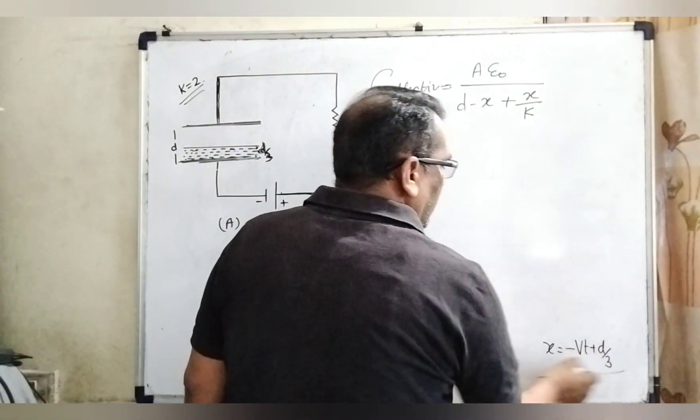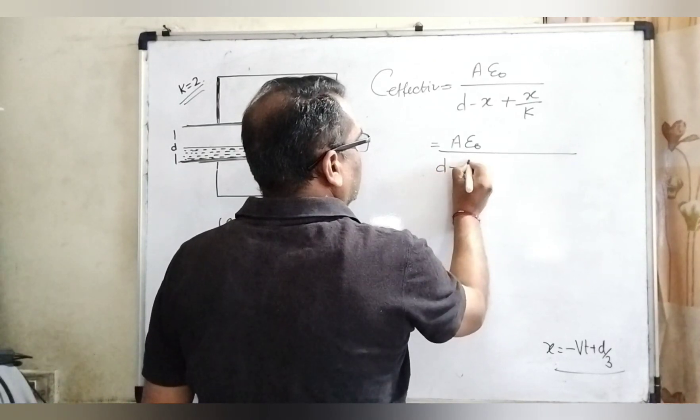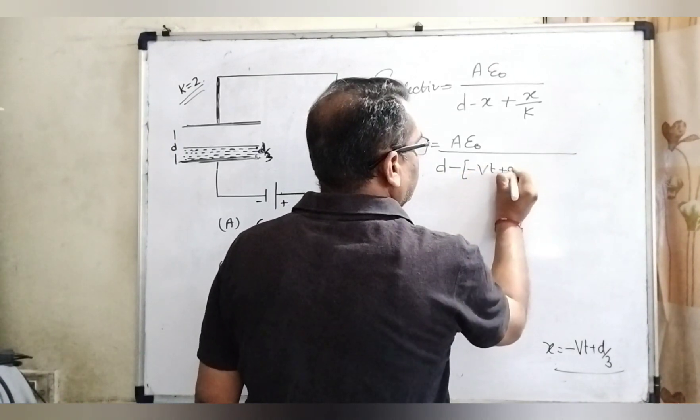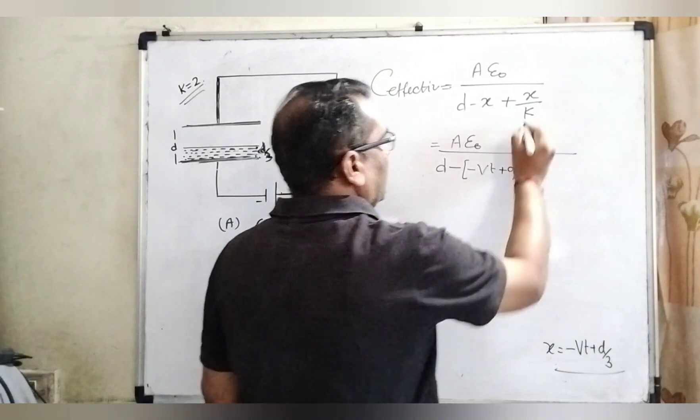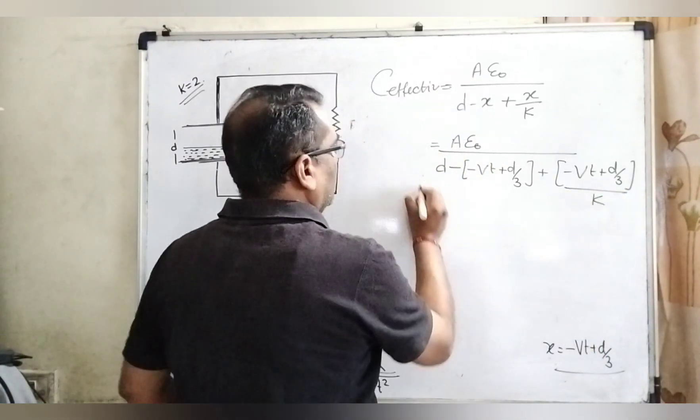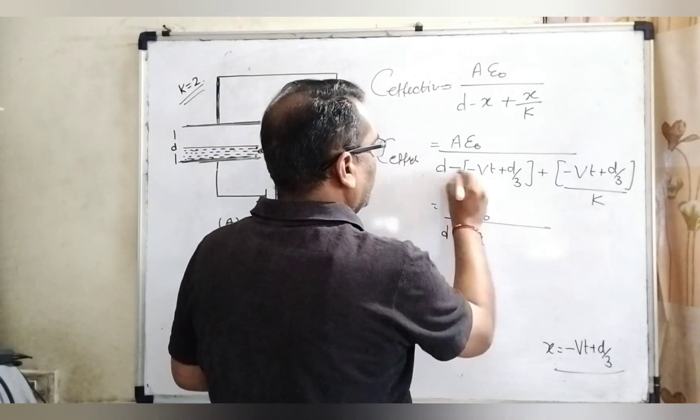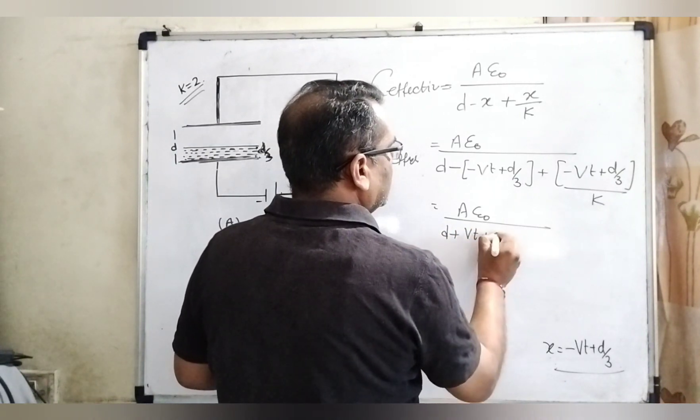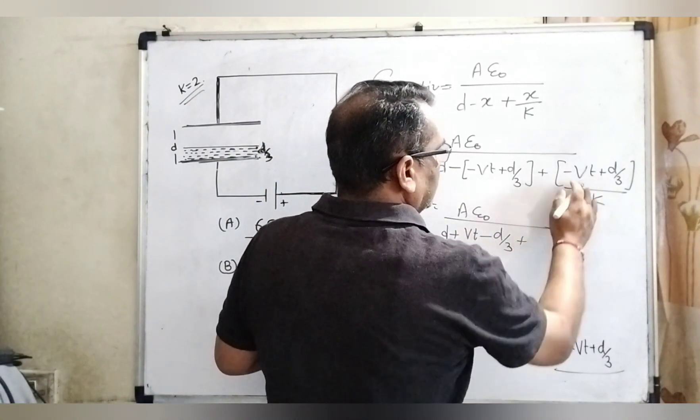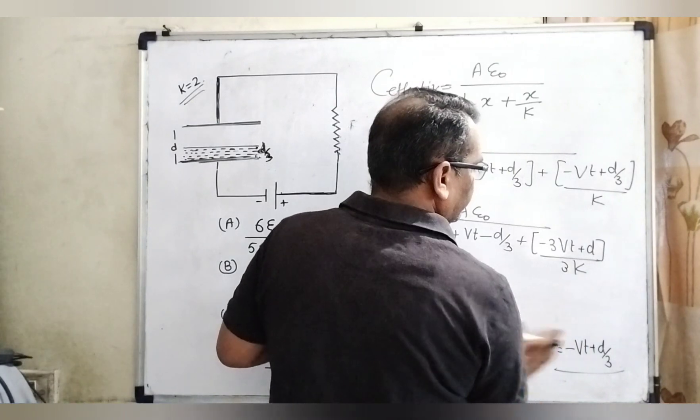Now, substitute the value of x in our given formula. So, C equals A epsilon 0 over d minus x plus x by k. Here x equal to minus Vt plus d by 3. So C equals A epsilon 0 over d minus open bracket minus Vt plus d by 3 close bracket plus minus Vt plus d by 3 by k.